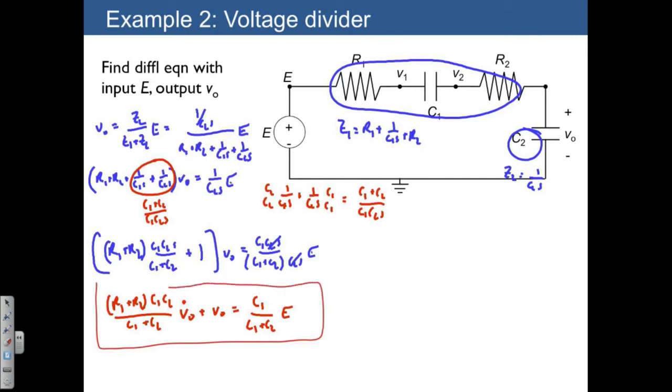So this gives us the differential equation for this system, and we weren't asked to do this, but just for fun, we can give an idea of what the step response for this system is. If we applied a unit step to E, we immediately see that we know what the steady state output is going to be. That's going to be equal to C1 over C1 plus C2.